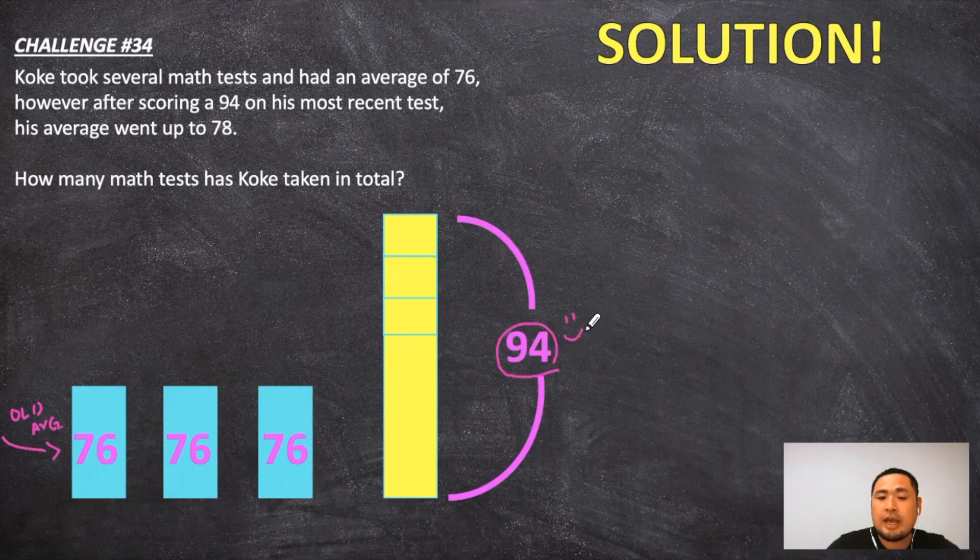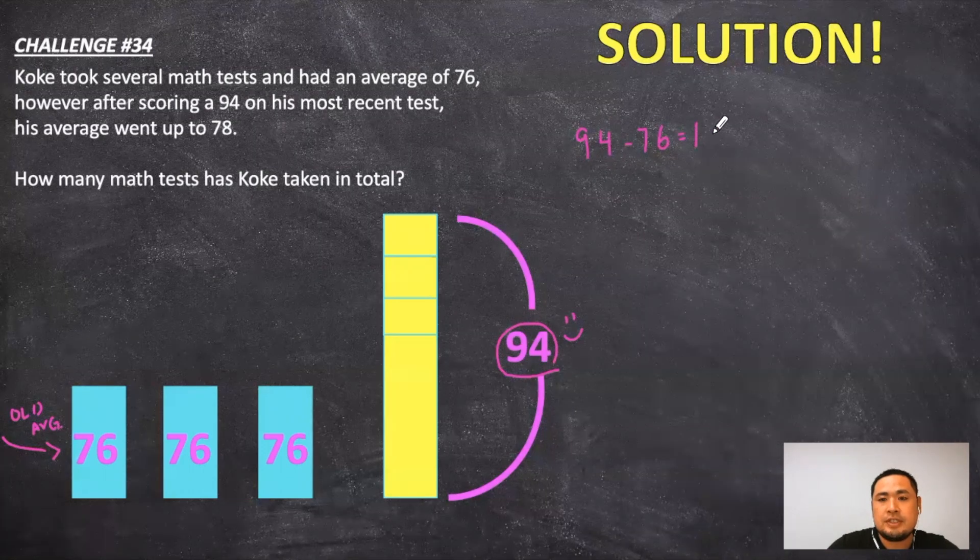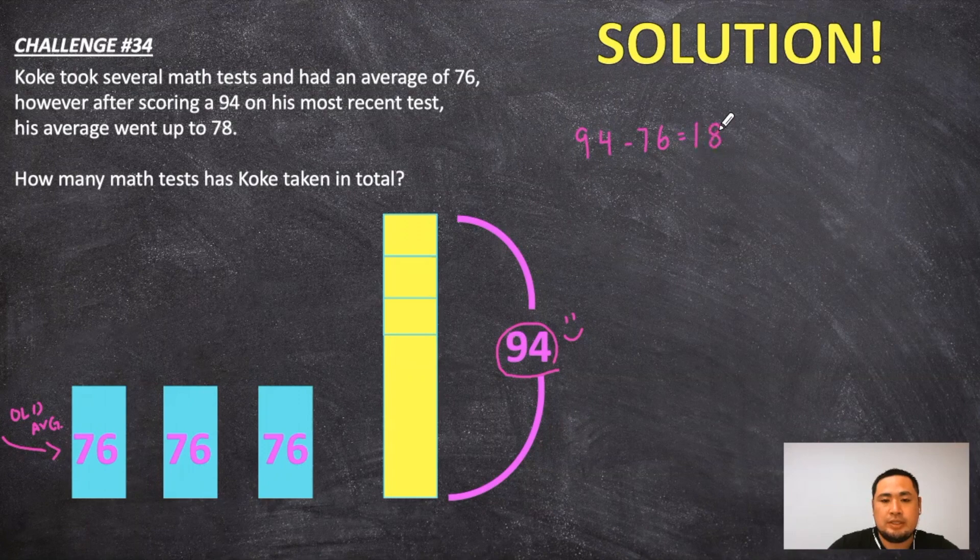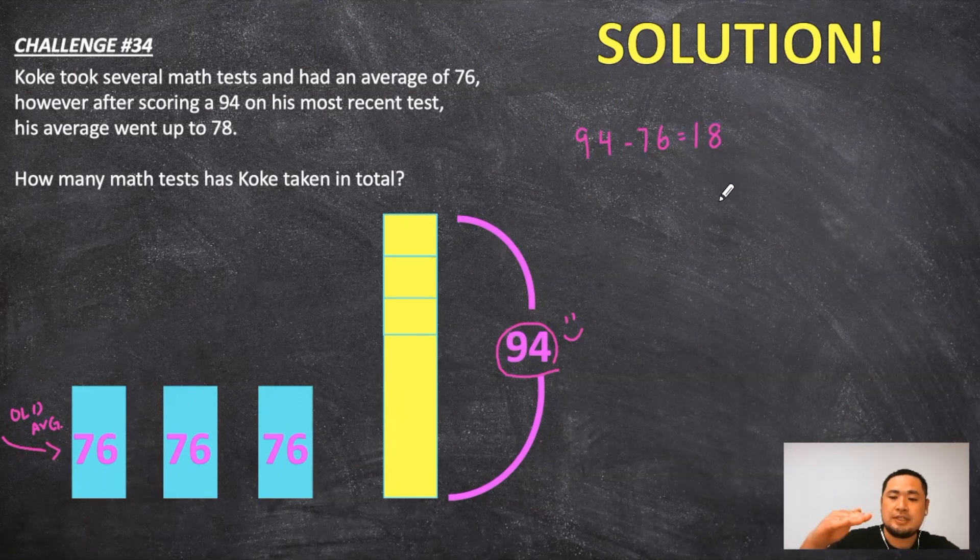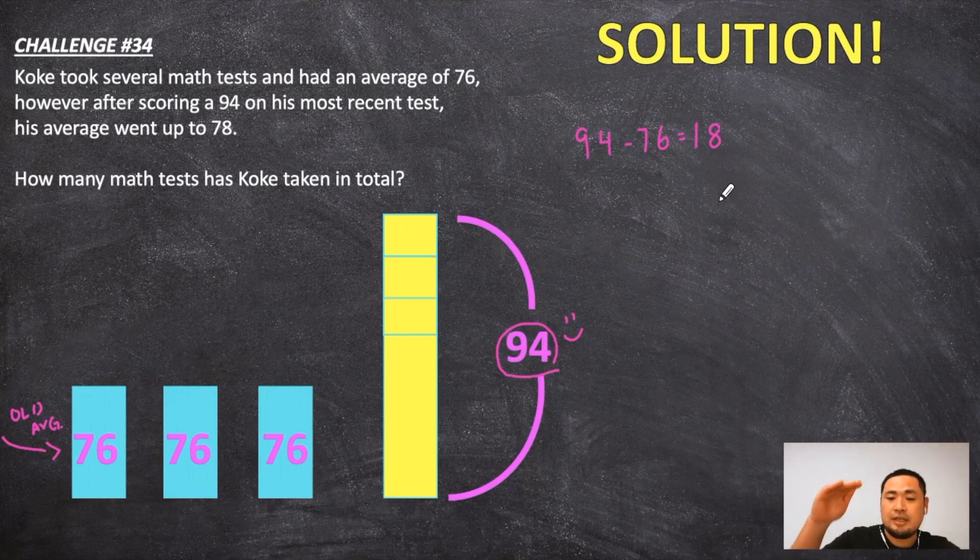So I can think of it as taking the difference of my newest test, which was 94, and my old average of 76 and find the difference to be 18 points. And because the average went from 76 to 78, that's a difference of two points. We can then say that each of these smaller rectangles are going to be worth two points each.